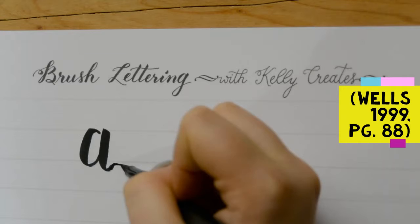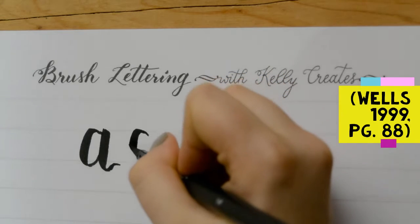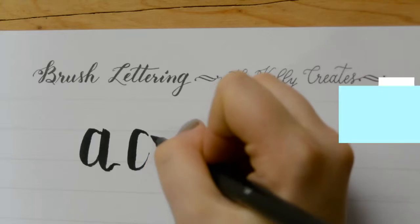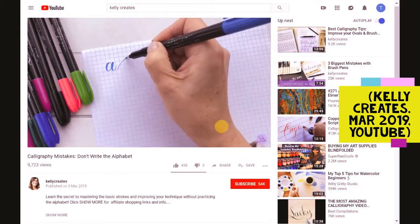Vygotsky's more knowledgeable other refers to learning from someone of a higher understanding in regards to a particular skill. Vygotsky's theory of cognitive development is often referred to as a socio-cultural theory.